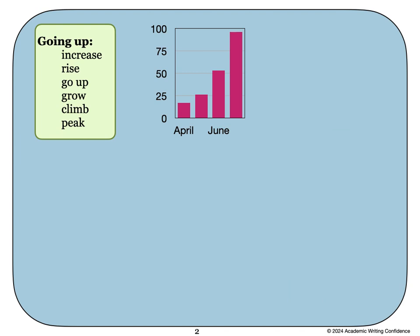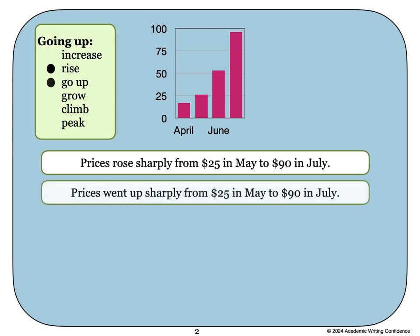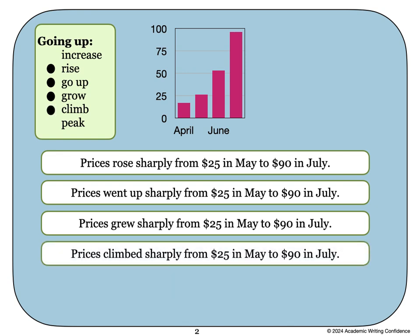Instead of saying increased, we can use the word rise. However, most information in the chart is something that has already finished. It's in the past, so we will need to use the past tense of these verbs. So, for example, prices rose sharply from $25 in May to $90 in July. Or we could say prices went up sharply from $25 in May to $90 in July. Or prices grew sharply. Or prices climbed sharply.